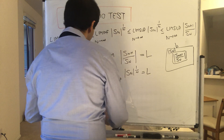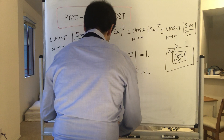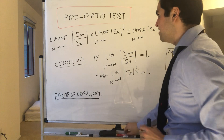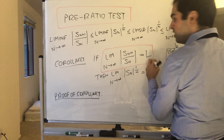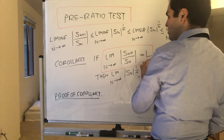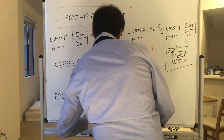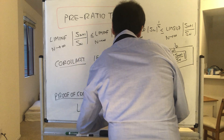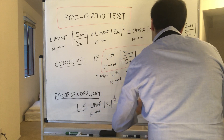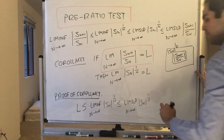Proof of corollary. We know this limit exists, so in particular it equals the liminf and the limsup. From this identity, we know the liminf of the ratio test, which is L, is less than or equal to the liminf of the root test, which is less than or equal to the limsup of the root test, and that's less than or equal to the limsup of the ratio test, which is also L.